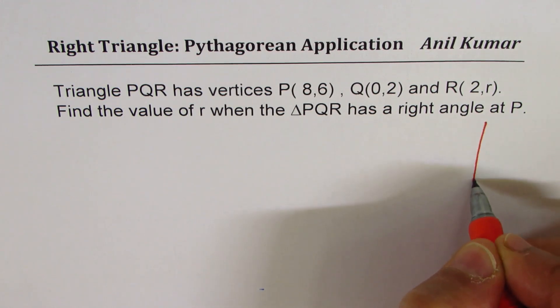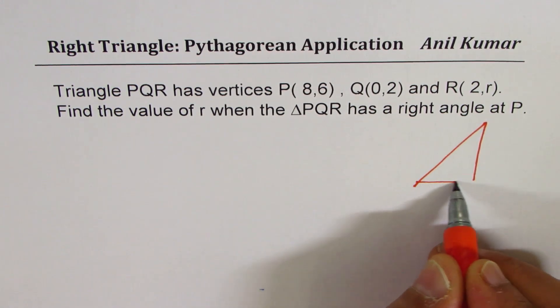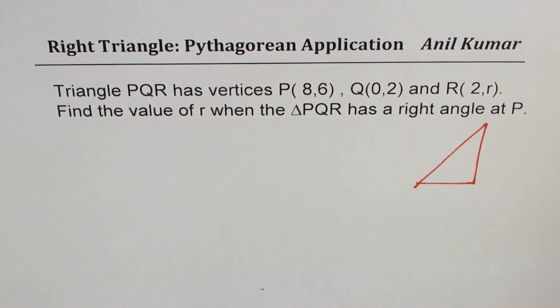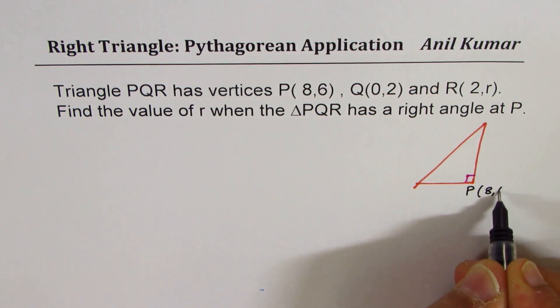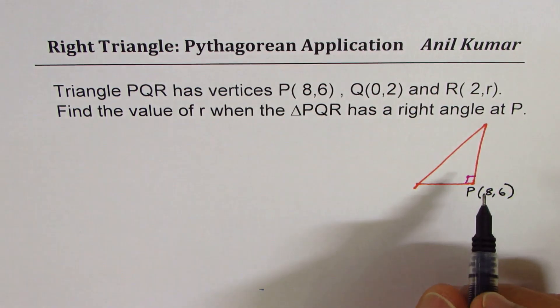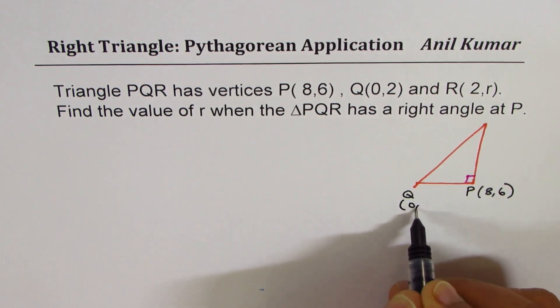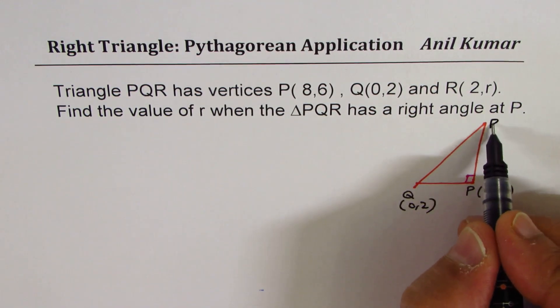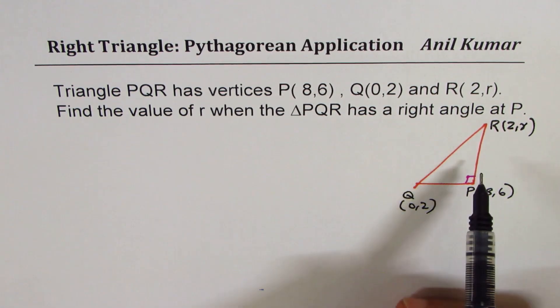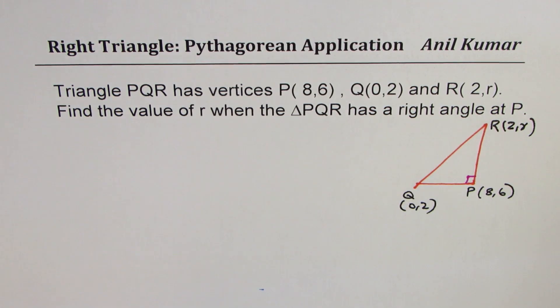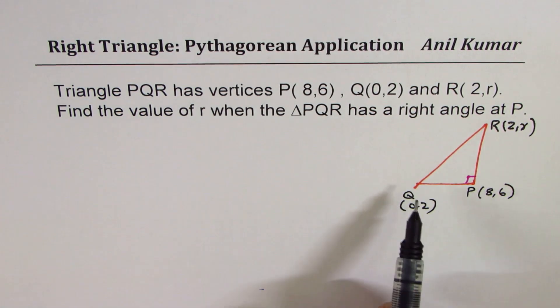So let's construct a triangle kind of like this, where we have right angle at P. Coordinates given to us are, for P it is (8,6). For Q, it is (0,2). And for R, it is (2,r). So this is just an approximate drawing, which helps you to solve the equation. We have not used a coordinate plane at all to place them properly.